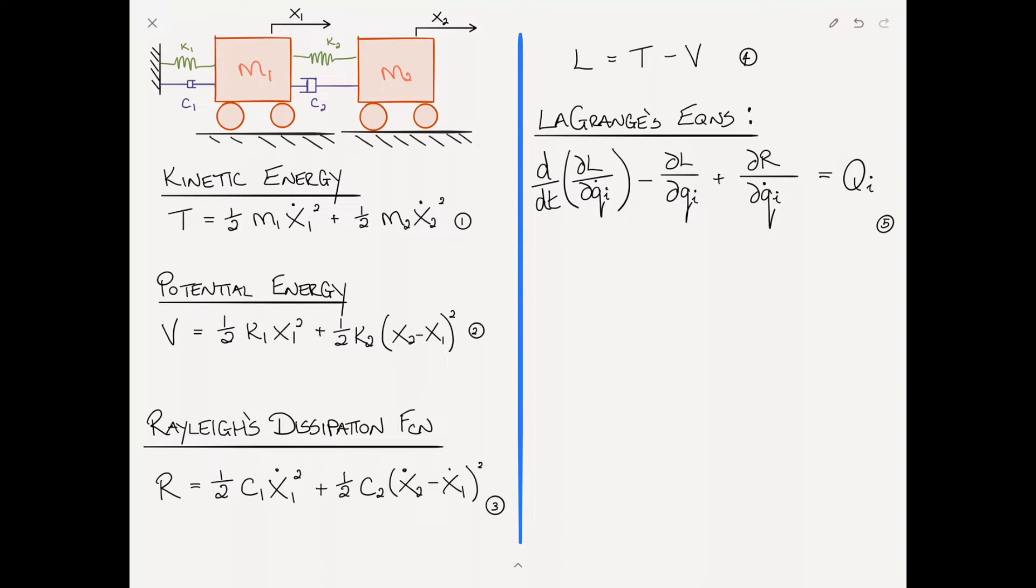This part is exactly what you had before, and we've added the Rayleigh's dissipation function term which includes damping. We take the partial derivative with respect to velocity, but we're not taking the time derivative after that. To find the first equation of motion, we substitute equations 1, 2, and 3 into 4, and then substitute all of that into 5.